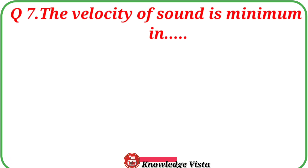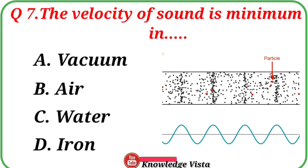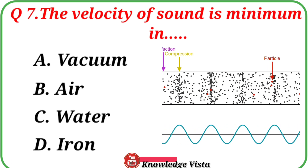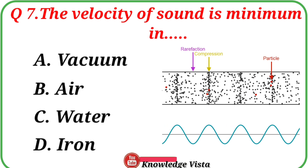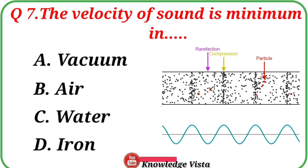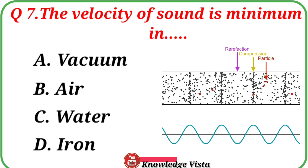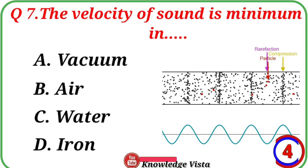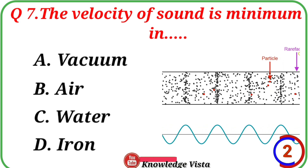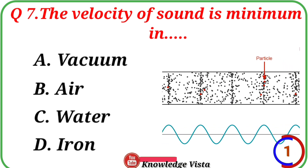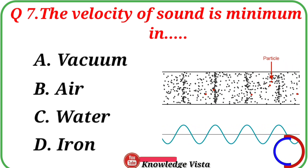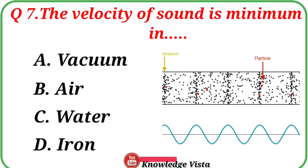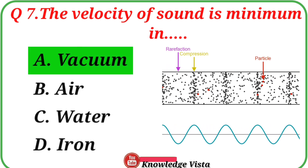Question number seven: The velocity of sound is minimum in? Option A: Vacuum, B: Air, C: Water, D: Iron. Correct answer is option A: Vacuum.